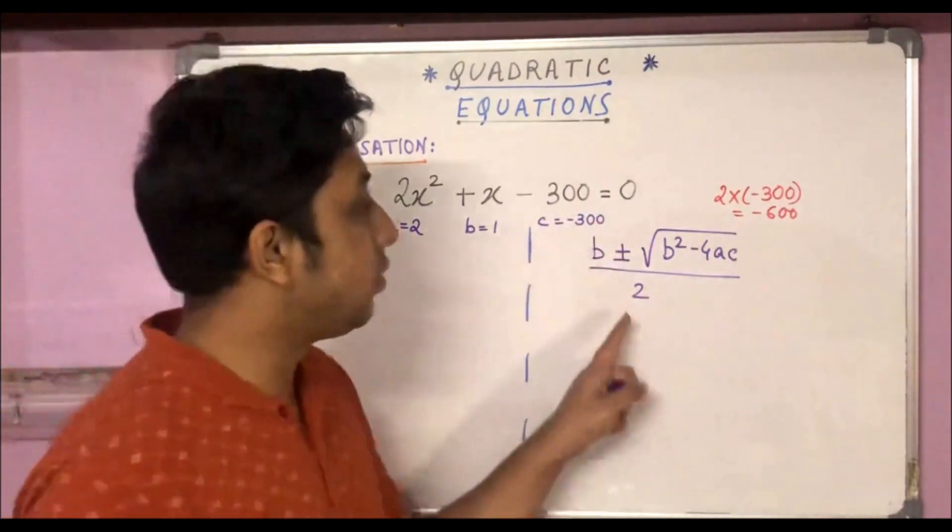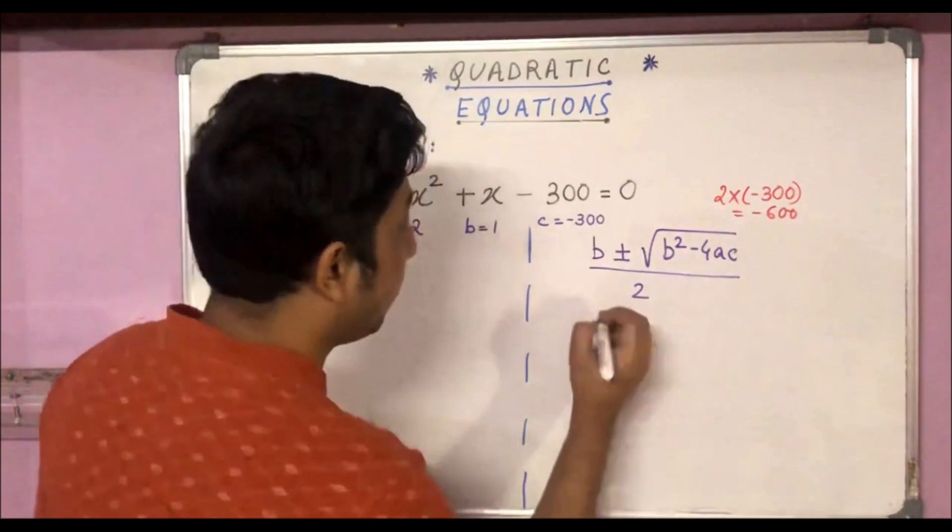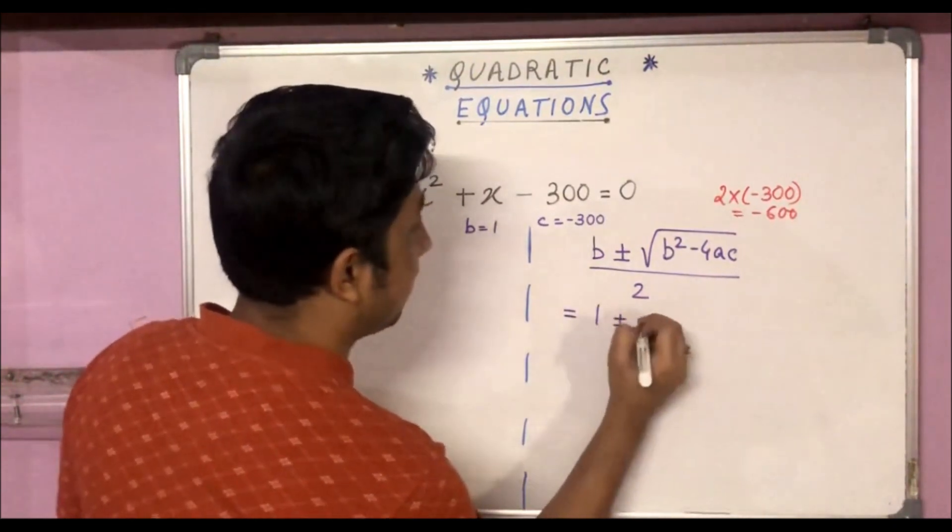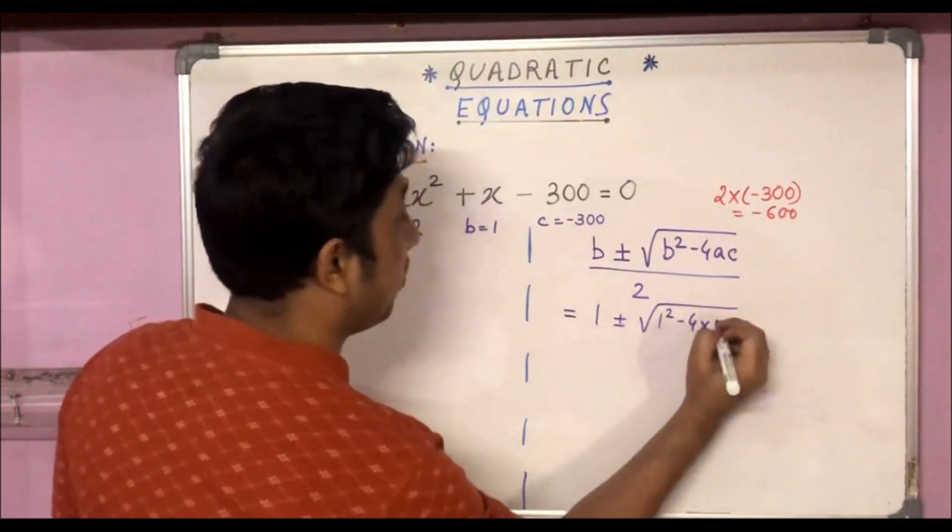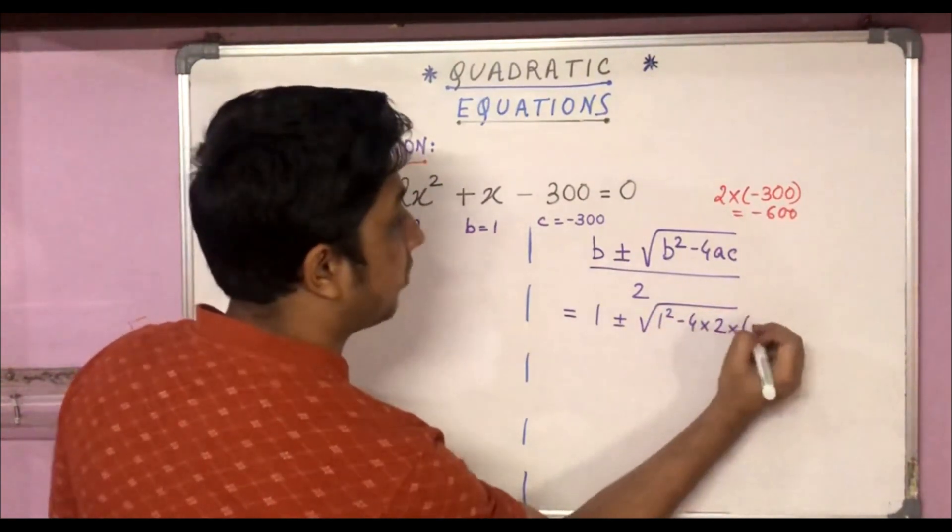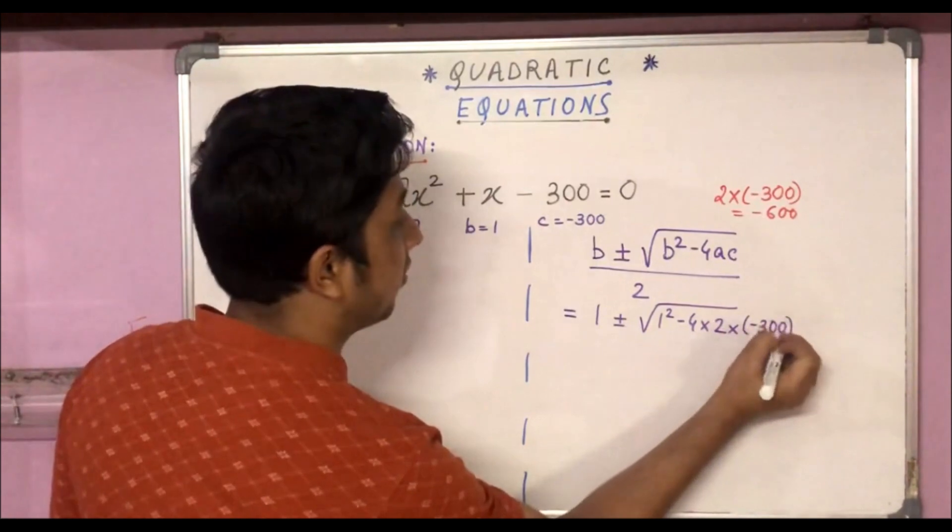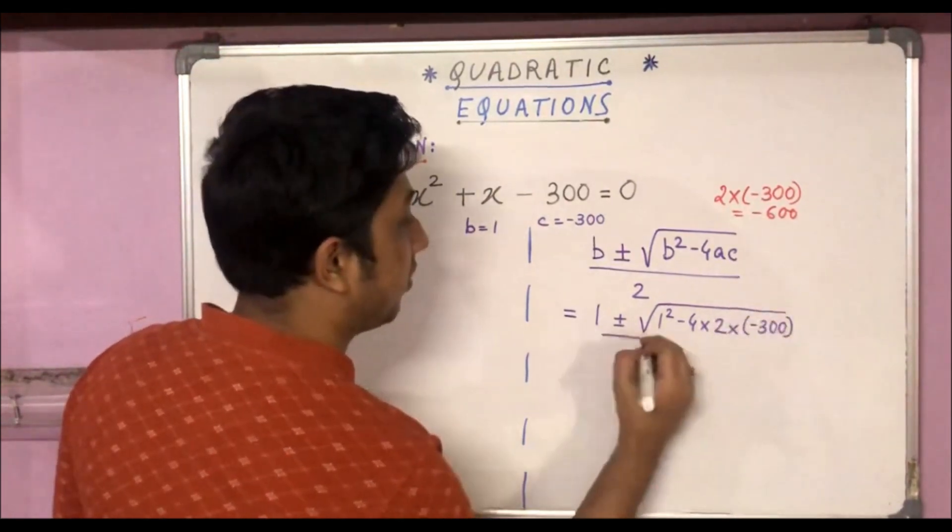Let's put these values in this expression. We get 1 plus minus root over 1² - 4 × 2 × (-300), divided by 2.